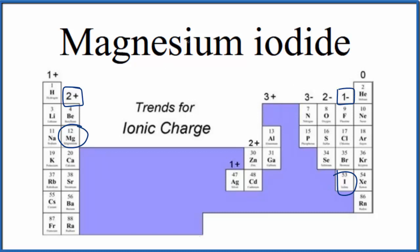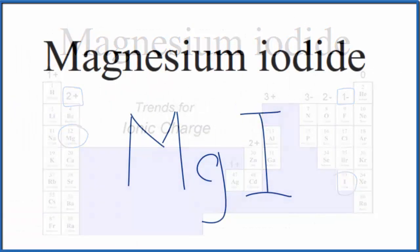So magnesium 2 plus, the iodide ion, that's from the iodine, which forms 1 minus ions. So for magnesium, we said 2 plus, and then that iodide here, 1 minus.